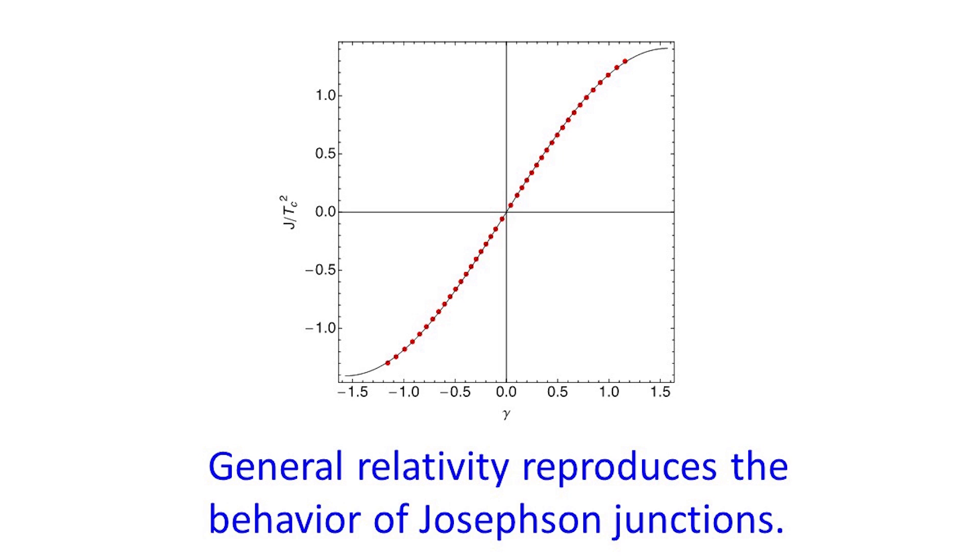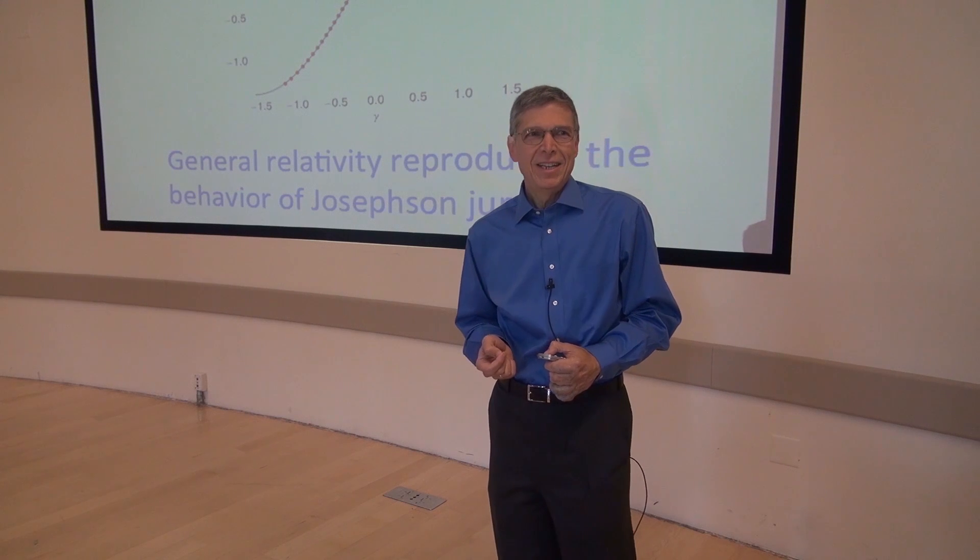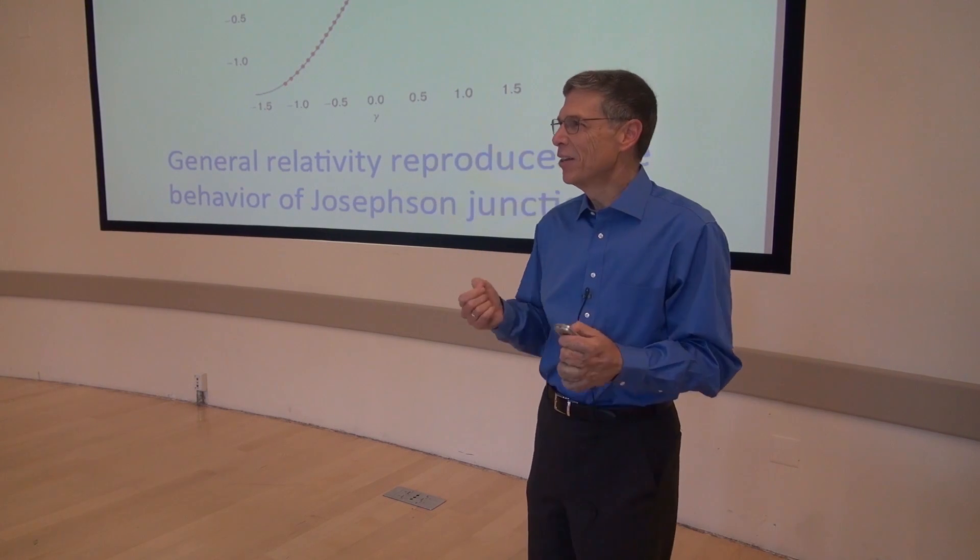And this plot shows the current across the junction as a function of some property of the superconductor. The red dots are the results of our calculations involving general relativity, and the solid black line is the expected behavior of a standard Josephson junction. And you see there's beautiful agreement.